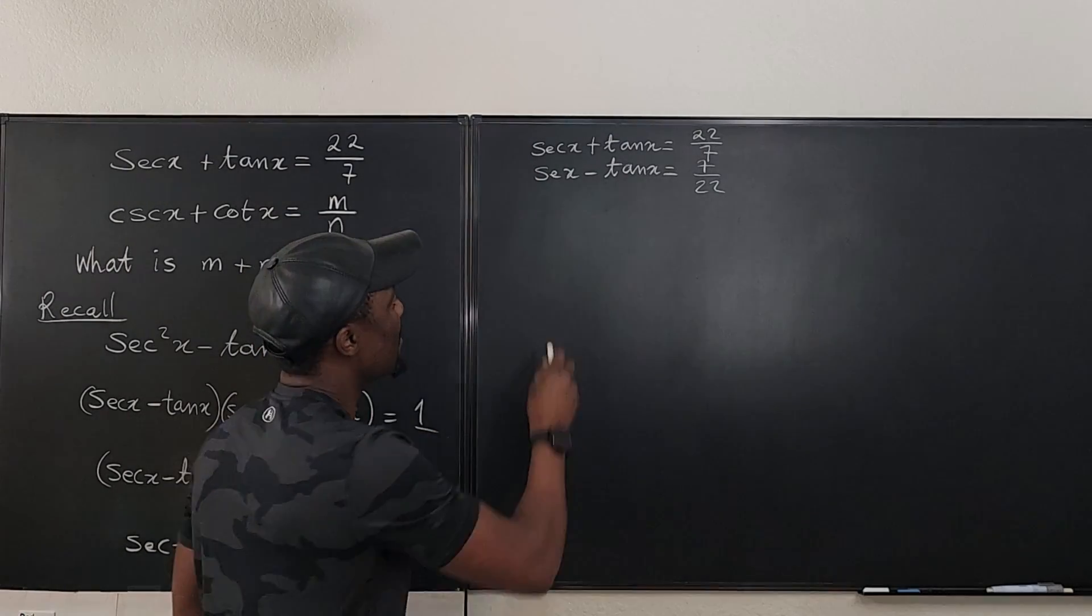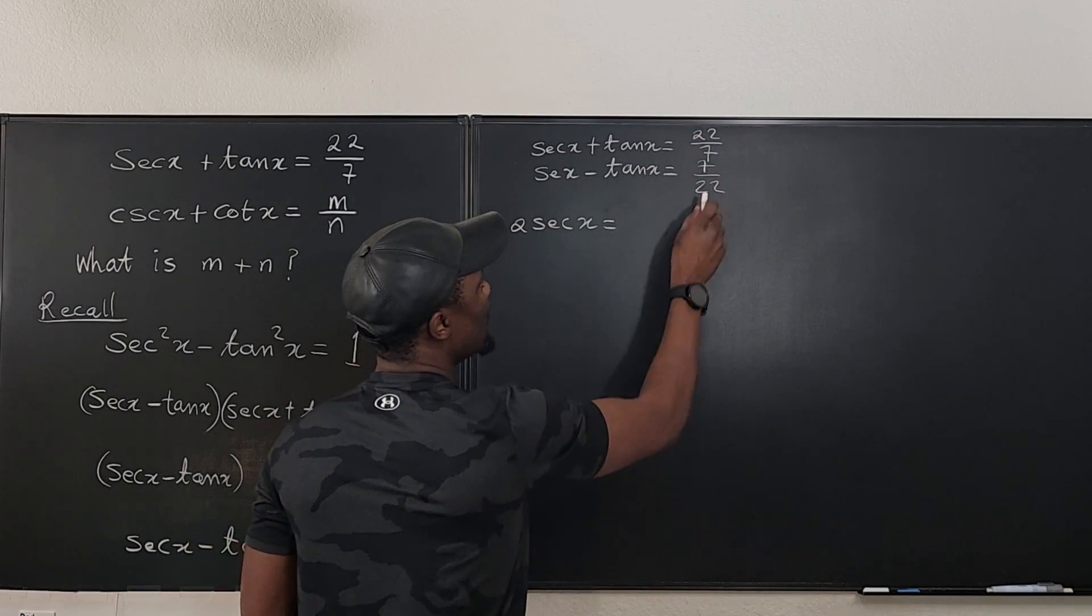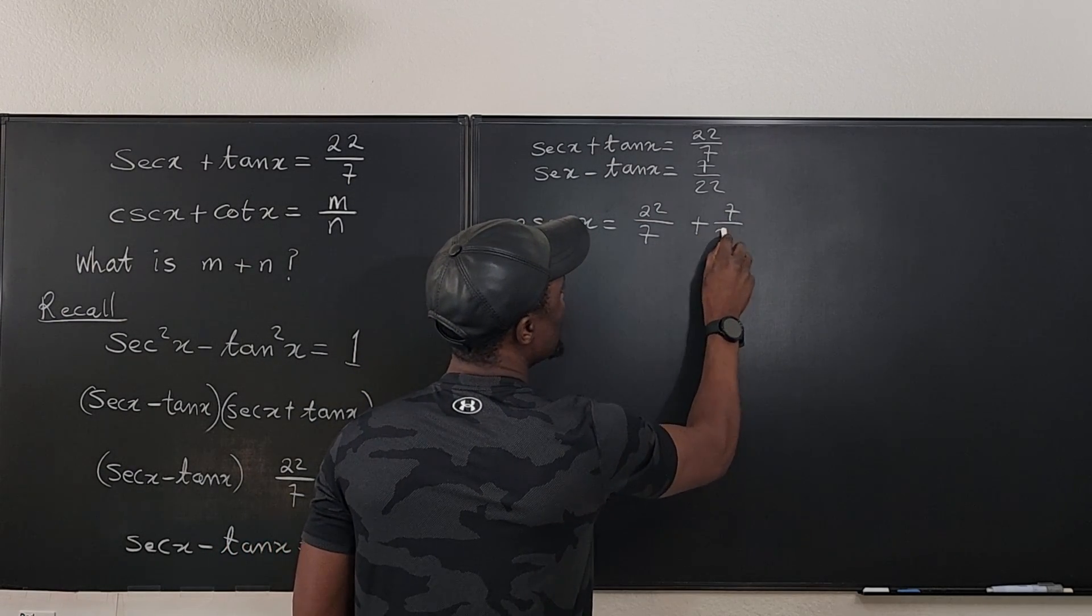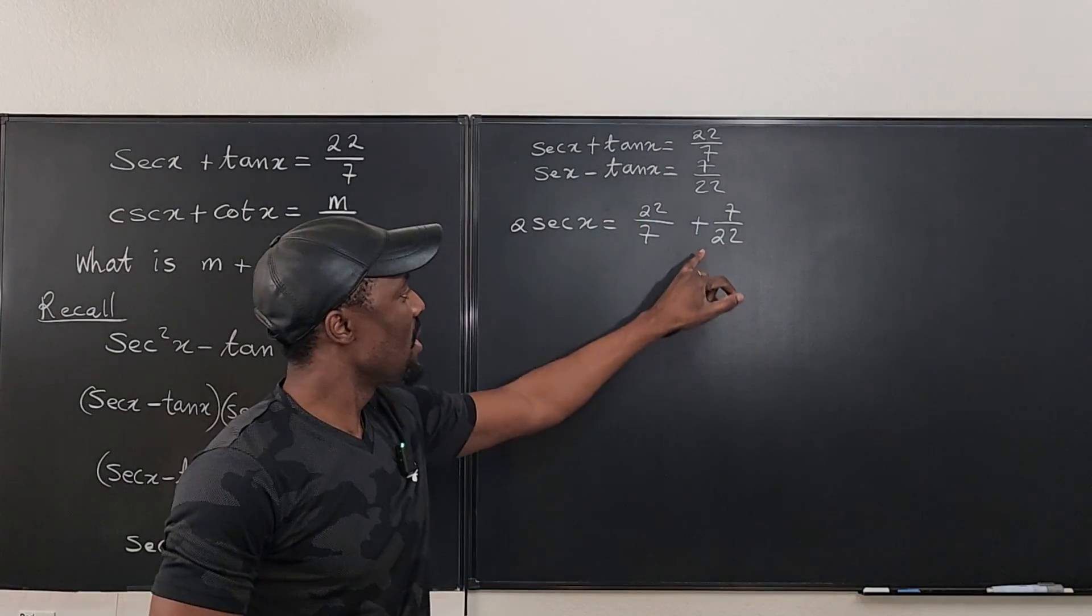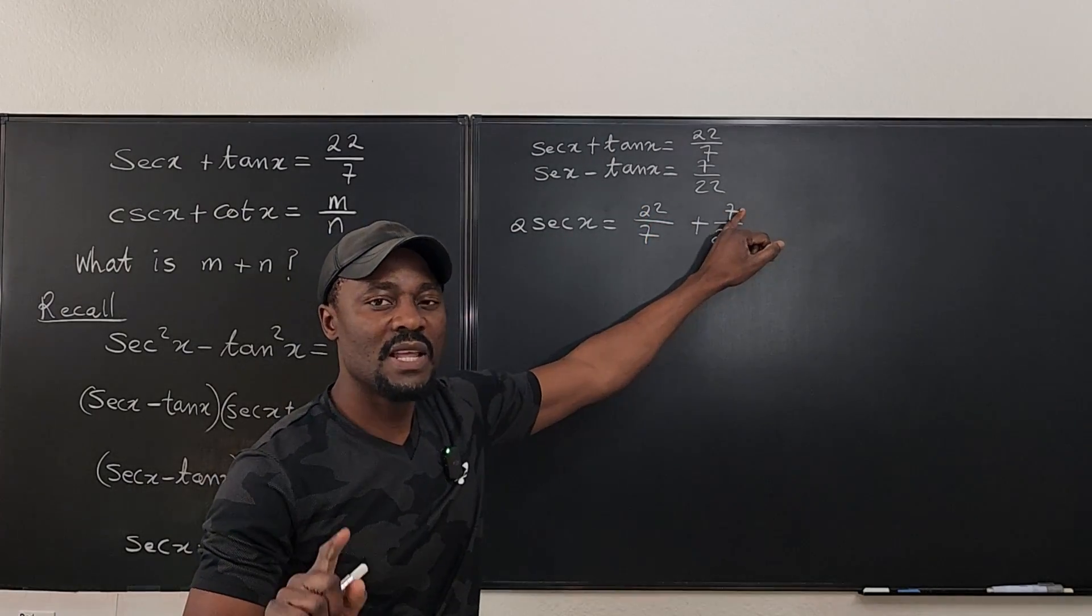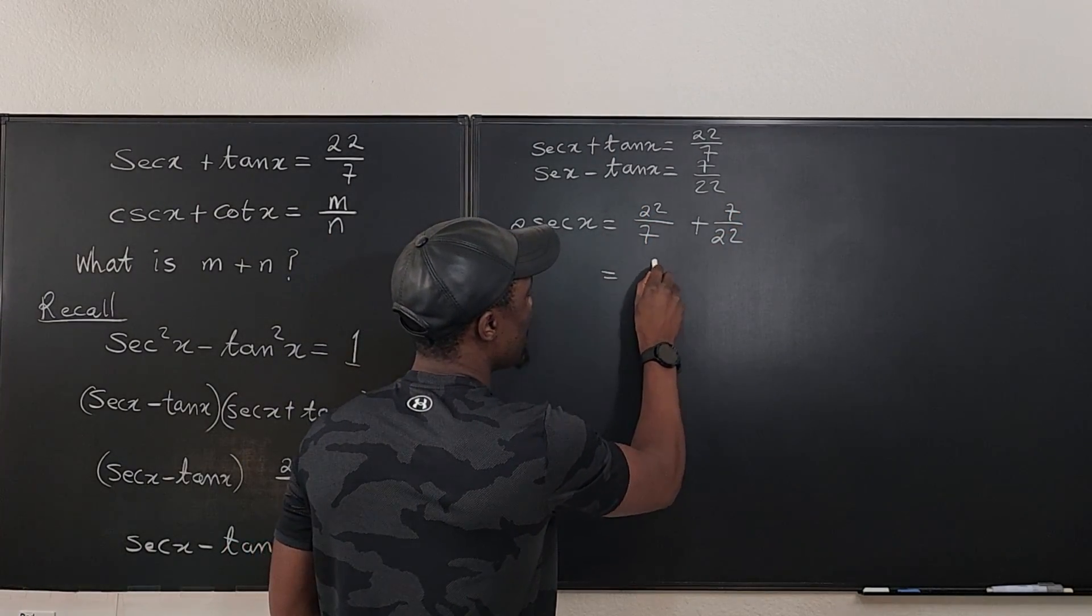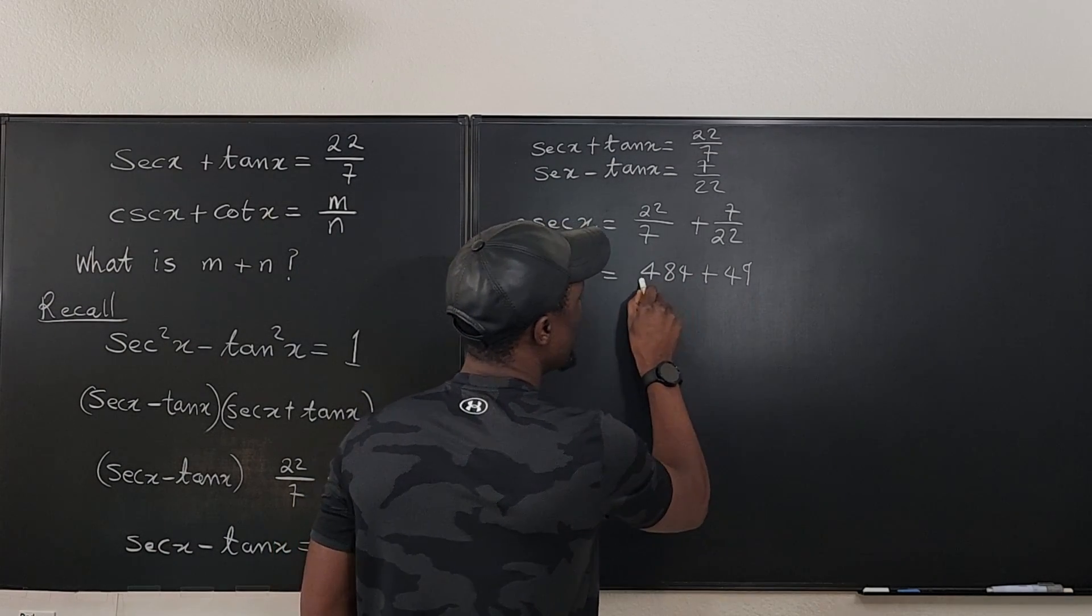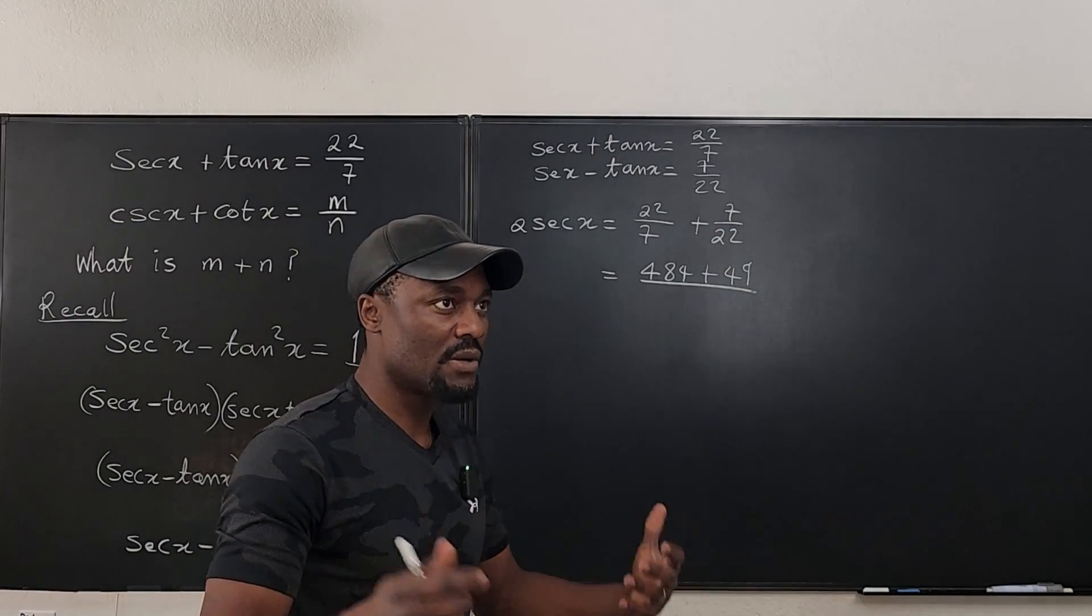So we can eliminate tan by just working with secant. So with secant, we add both together, we get 2 secant x will be the sum of these two, which is going to be 22 over 7 plus 7 over 22. And I know if you add these two together, 22 times 22 is 484. 7 times 7 is 49. If you add those together, you're going to end up with 484 plus 49 over what is 7 times 22. It's going to be 154.